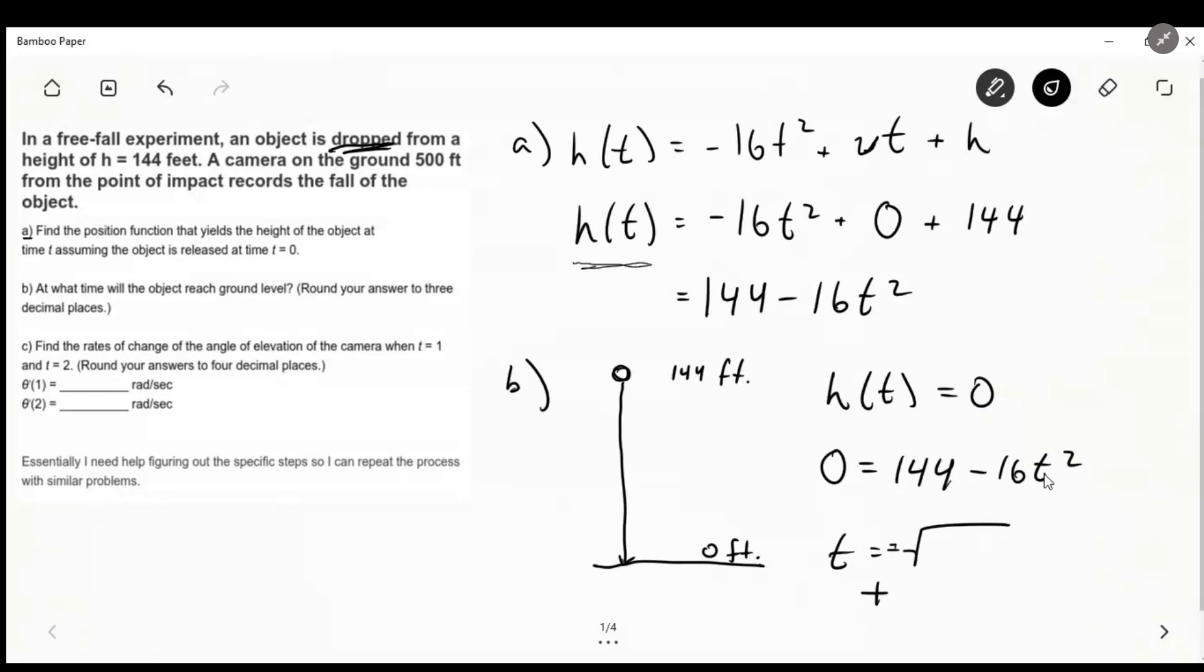Now let's look at part C. Find the rates of change of the angle of elevation of the camera when t is one and t is two. And it gives us a little hint here, theta prime of one and two radians per second, which is great because you should always include the unit. So let's jump right into part C because this is definitely the hardest part of the problem.